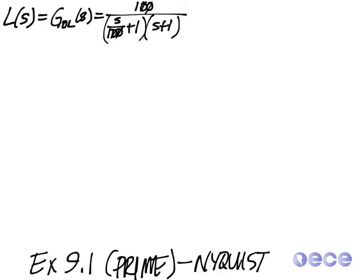The previous example was a generic transfer function k over tau 1 s plus 1 times tau 2 s plus 1. So now I'm going to actually add values for tau 1 and tau 2. Our open loop transfer function is 100 over s over 100 plus 1 times s plus 1.